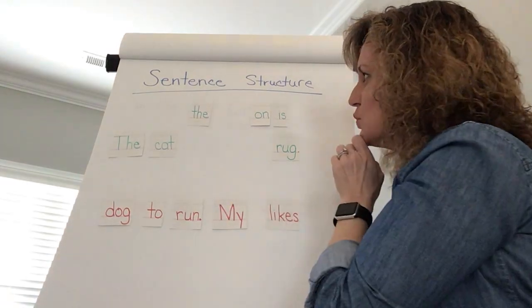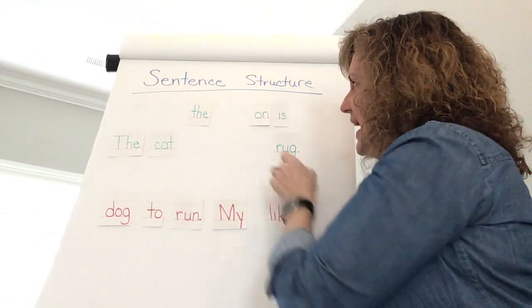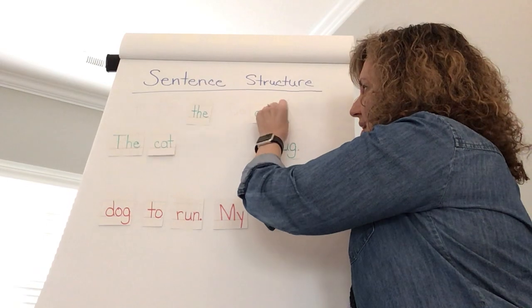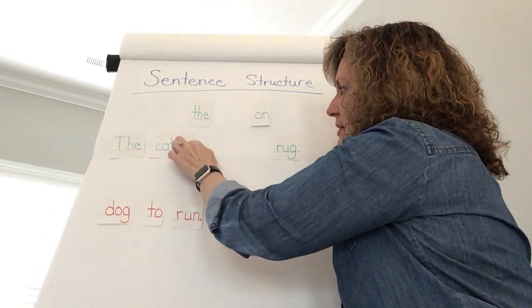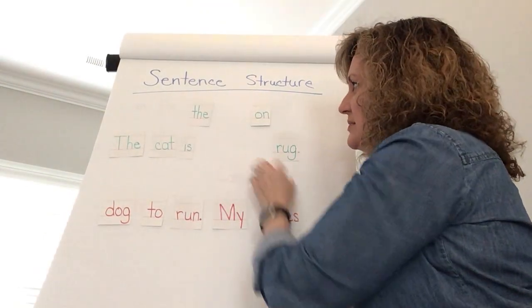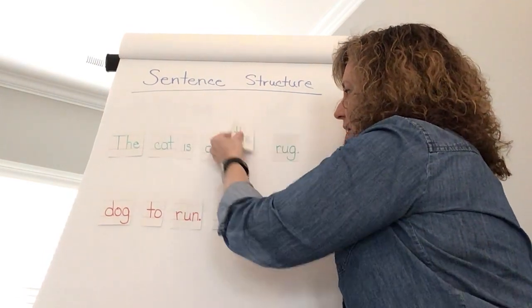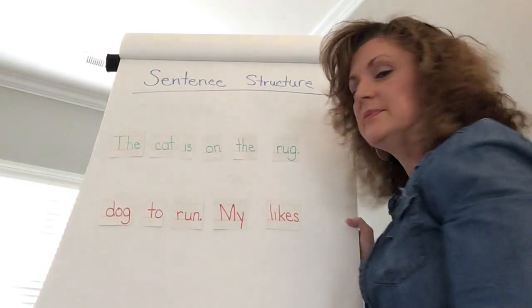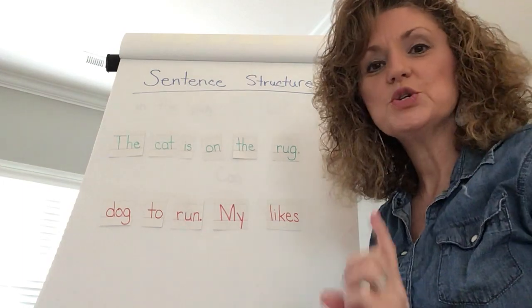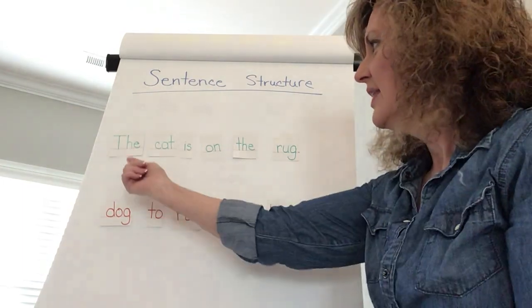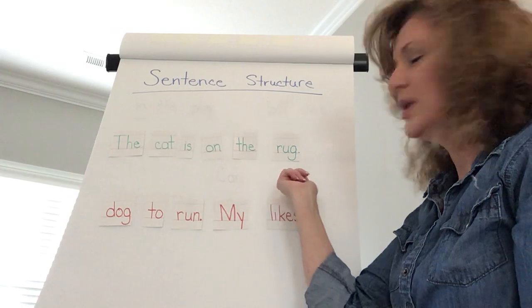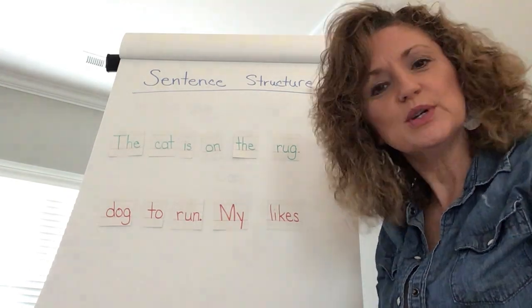What about the cat and this rug? The cat. Could I say is? Where is the cat? On the rug. Now let's reread our sentence and make sure it does make sense. The cat is on the rug. That makes sense. What a great sentence.